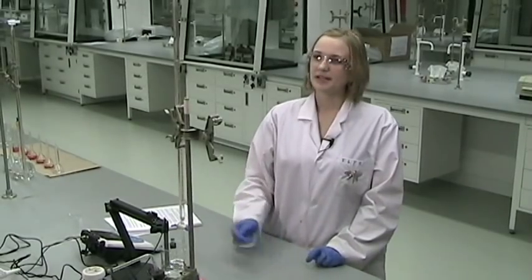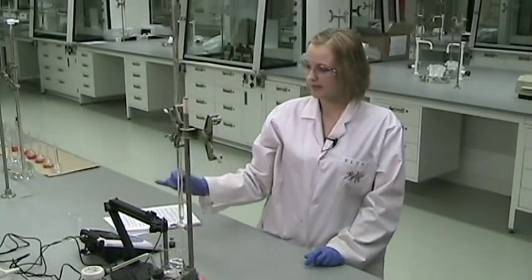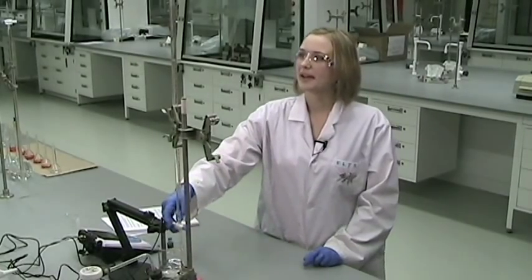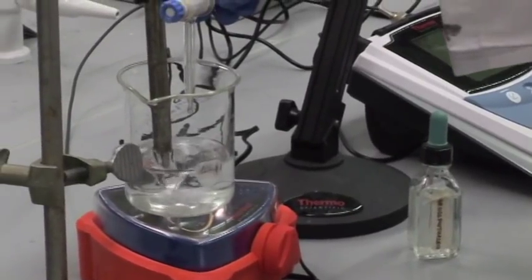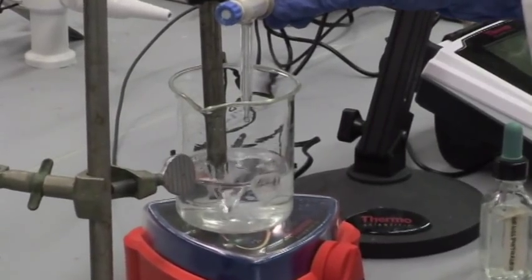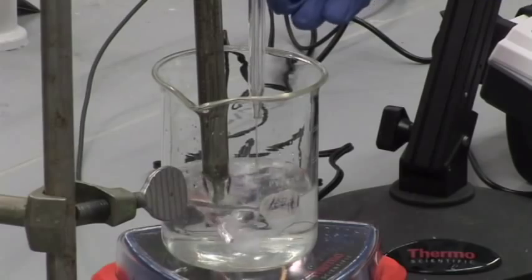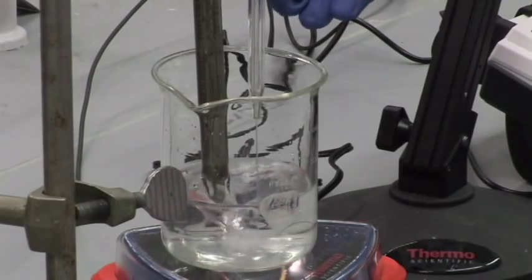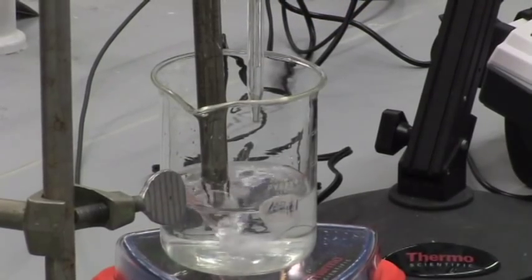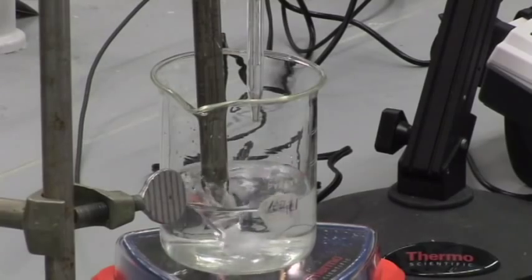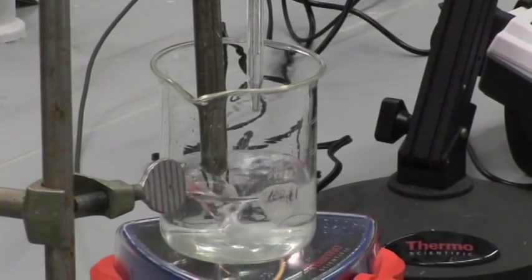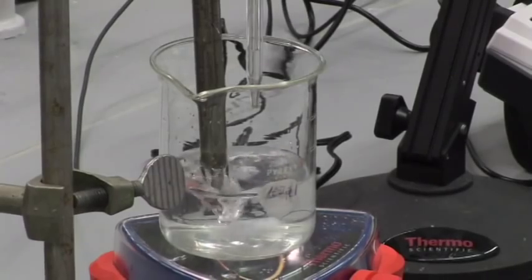So when I'm ready to begin, and I have my initial volume and initial pH recorded, I will start by adding about two mils of base to the acid solution. Now, you want to plot many points along the curve, and you want to be able to see the shape of the curve before there's a steep increase in pH.